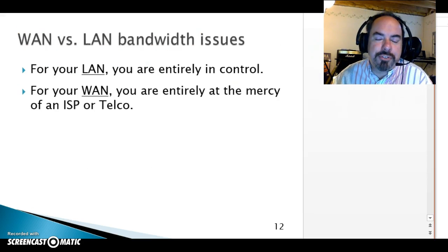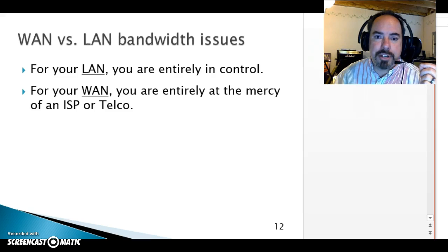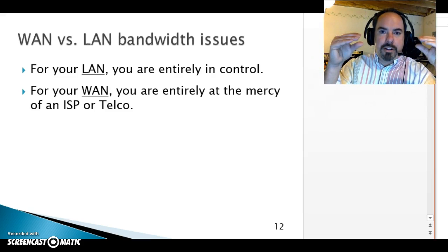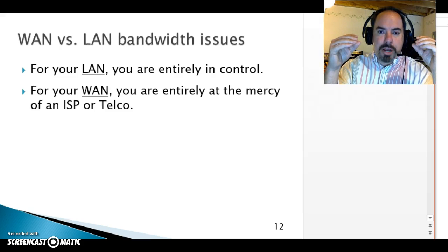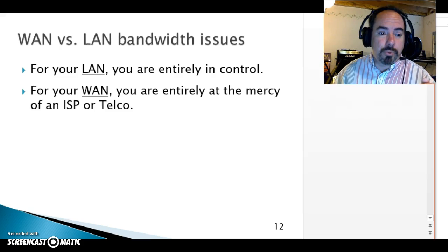Later in the course we'll get into the differences between LAN and WAN, but remember: with a LAN, you're in total control over the bandwidth because you're setting up the switches and cabling. With the WAN, you have no control whatsoever unless it's a private WAN with routers at both ends on a private leased line. If it's a shared line like Frame Relay or MPLS, you're at the mercy of the telco or your ISP, and you have to rely on them to troubleshoot. That means having a really good relationship with your WAN provider.